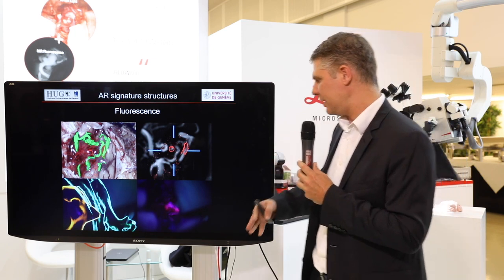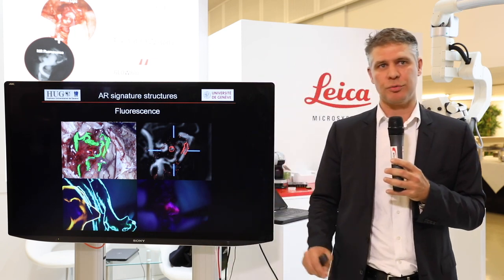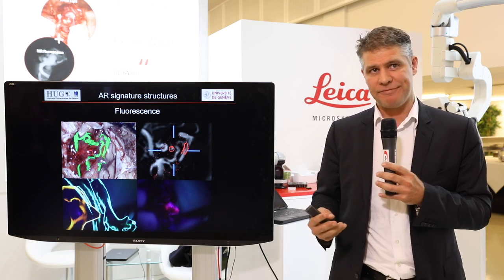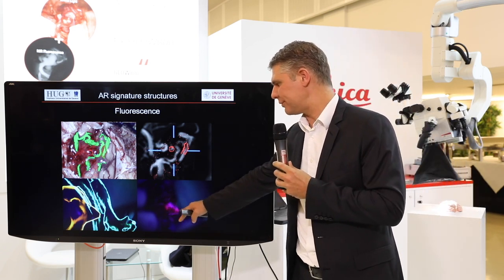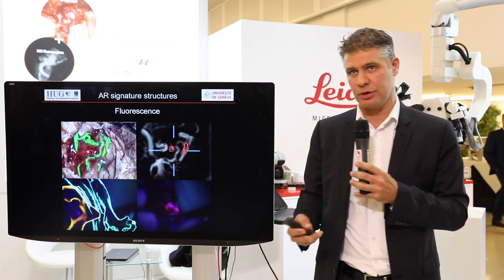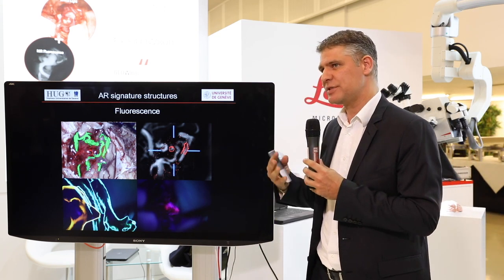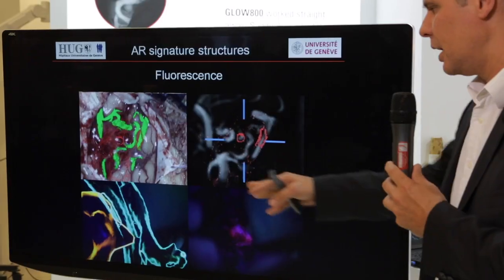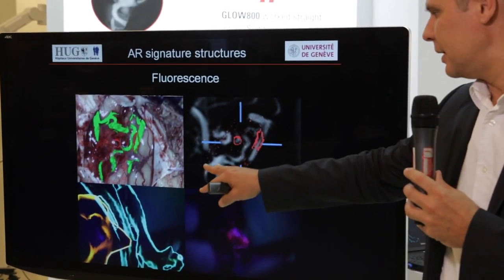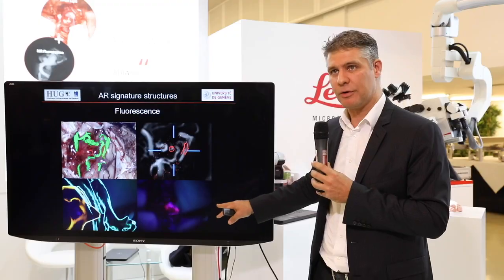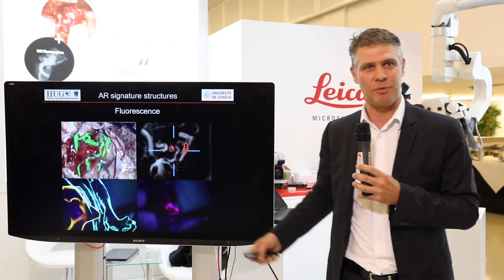When operating on tumors you can use 5-ALA. 5-ALA will be fluorescent and the edges of the fluorescence correspond to the contrast enhancement on imaging. If you segment the tumor prior to surgery, you can overlay the image of the tumor with the fluorescence. There are edges and shapes you can re-register.